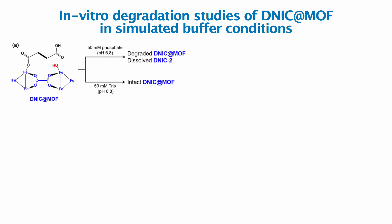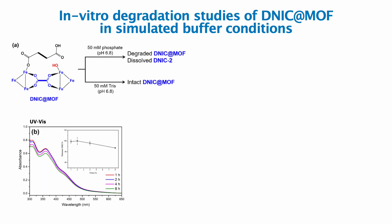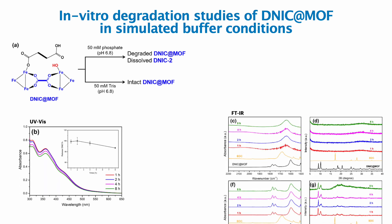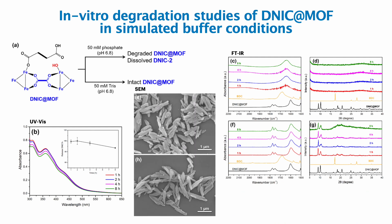In tris buffer, we found intact microrods of DNIC up to 8 hours. This intactness was confirmed with UV-Vis, FTIR, and SEM.